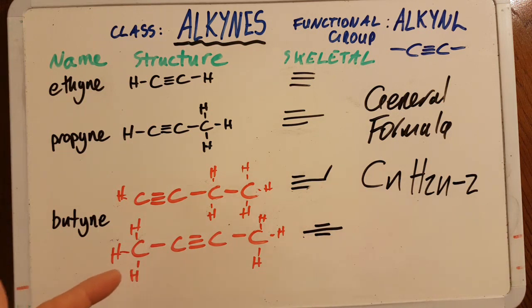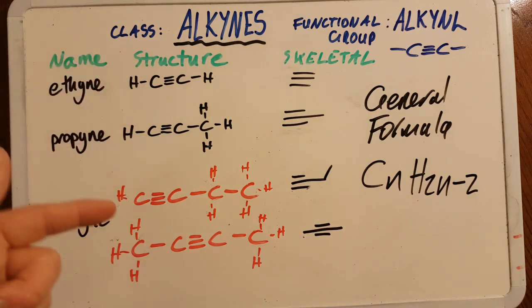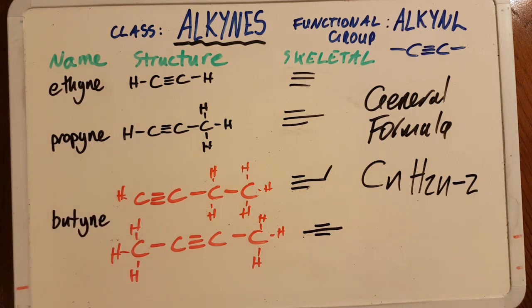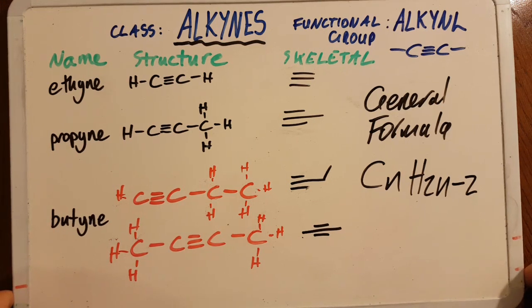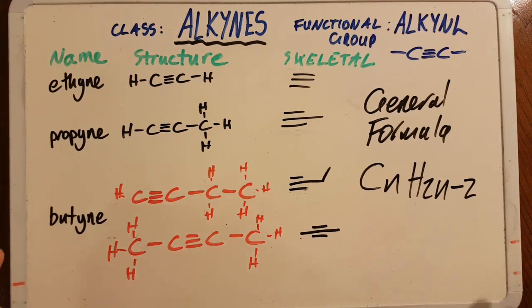So how many linear five carbon alkynes are there? Are there just one like ethene or are there more than one like butene? Answers in the notes below. And what about hexyne? How many different isomers of linear alkyne hexyne are there? Again, answers in the notes.